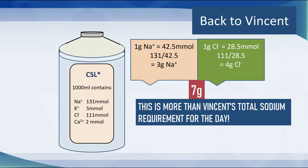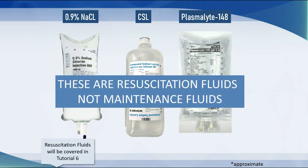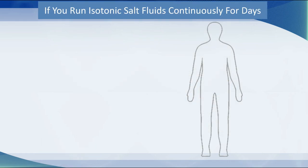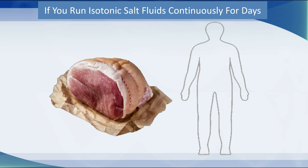It's not just sodium lactate solution — isotonic saline solution has even more: nine grams per bag. Plasmalyte 148, an isotonic fluid, contains about eight grams. These fluids are made to look like extracellular fluid and to replace extracellular fluid — whether the patient is vomiting, bleeding, or has diarrhea. They are resuscitation fluids. They are not maintenance fluids. If you keep running isotonic salt solutions for days and days, the patient starts to get puffy, then edematous — essentially functioning like a big lump of ham, just cured meat full of salt. This is devastatingly bad for the body.